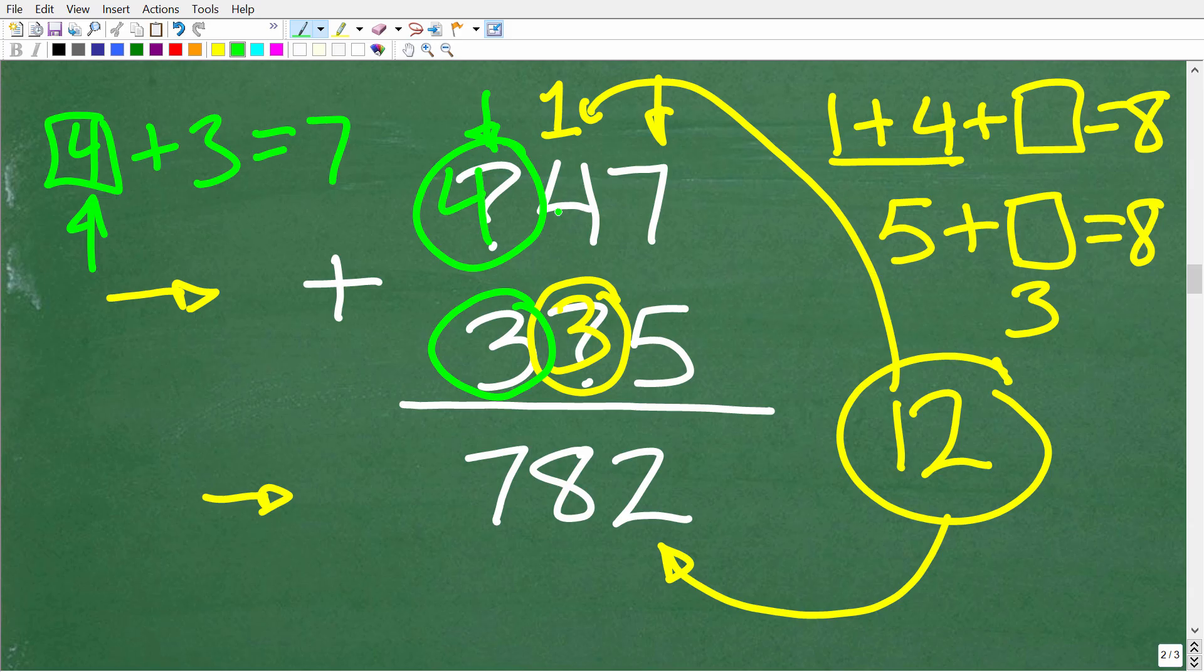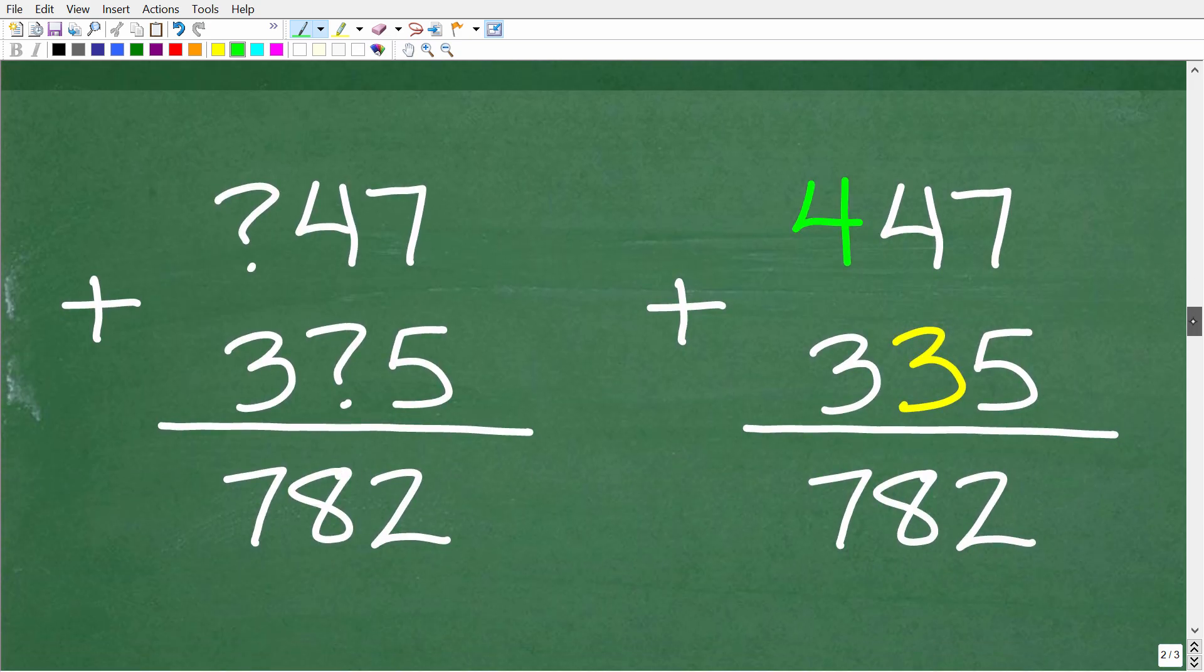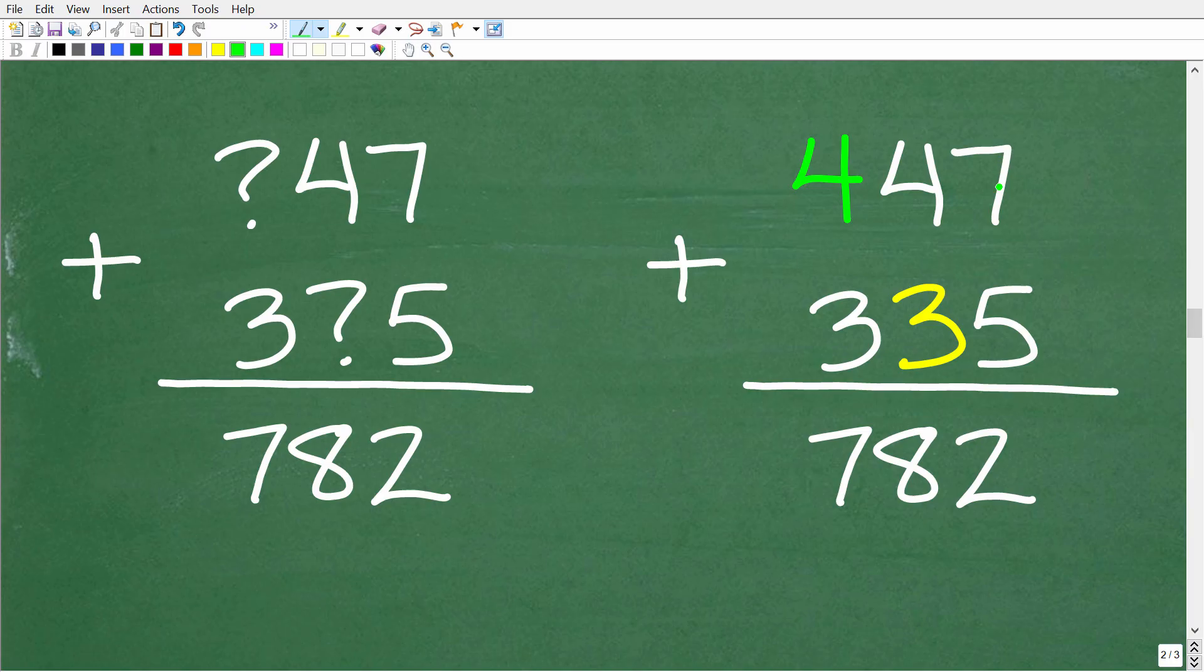All right, so our numbers here are going to be 447 and 335. And, of course, we can check this. So here is our original problem. So if we have 447 plus 335, we could do the simple arithmetic. So we have 7 plus 5 is 12. So we have 2 carry 1 right here. So this is going to be what? 4 plus 1 is 5 plus 3 is 8. So this is all checking out. And then 4 plus 3 is 7. So 447 plus 335 indeed is 782.